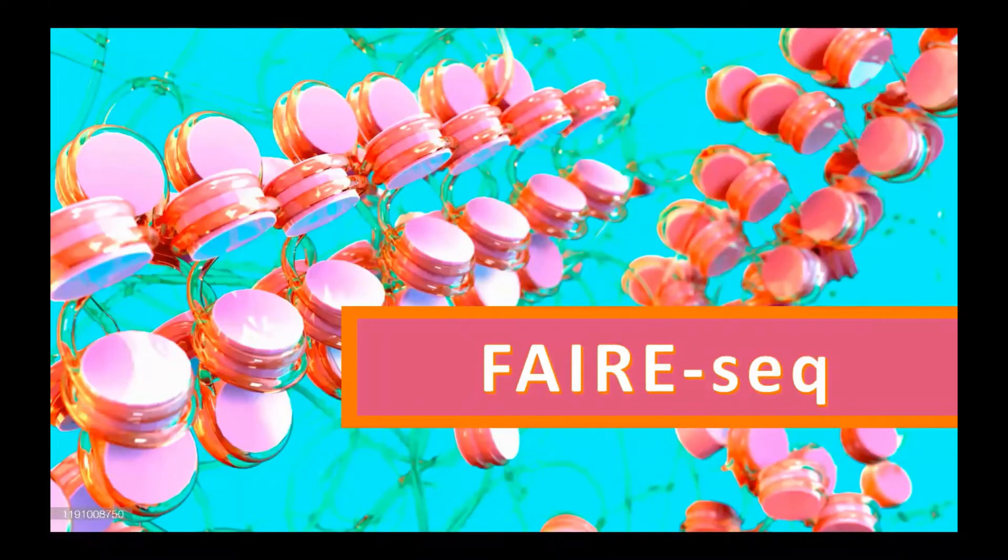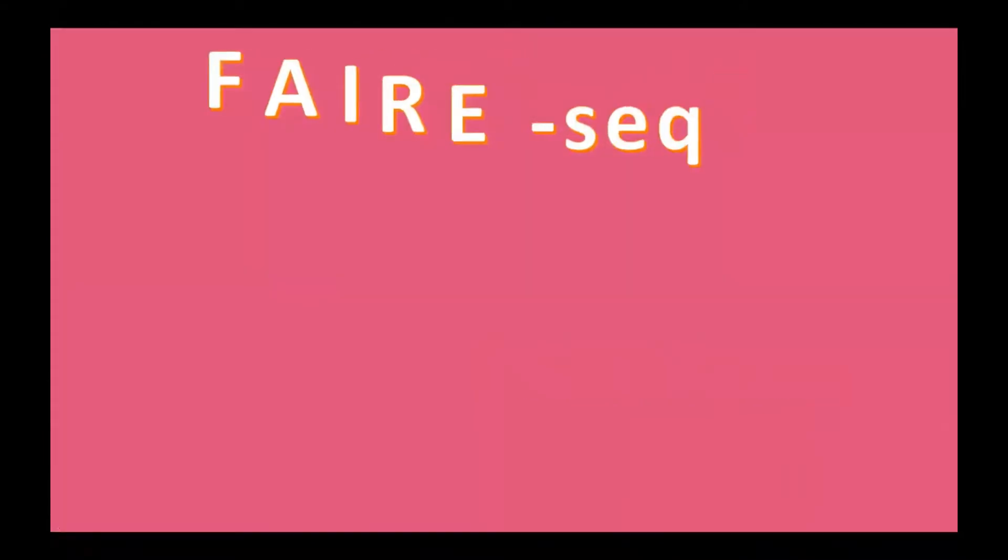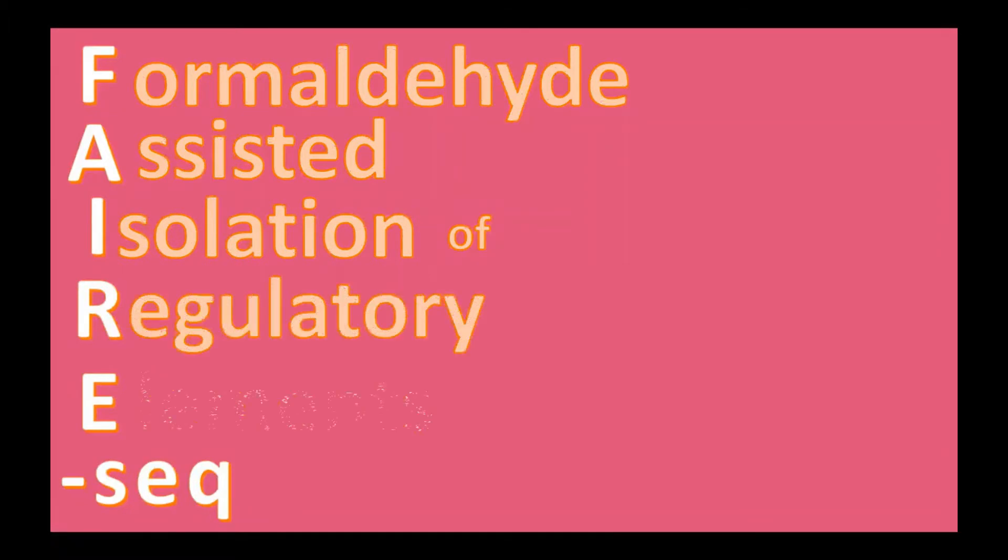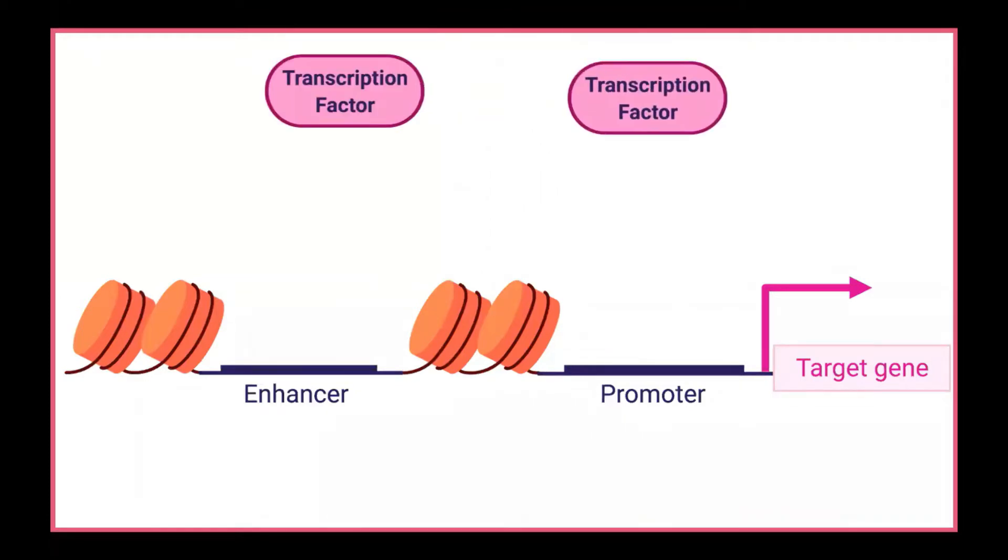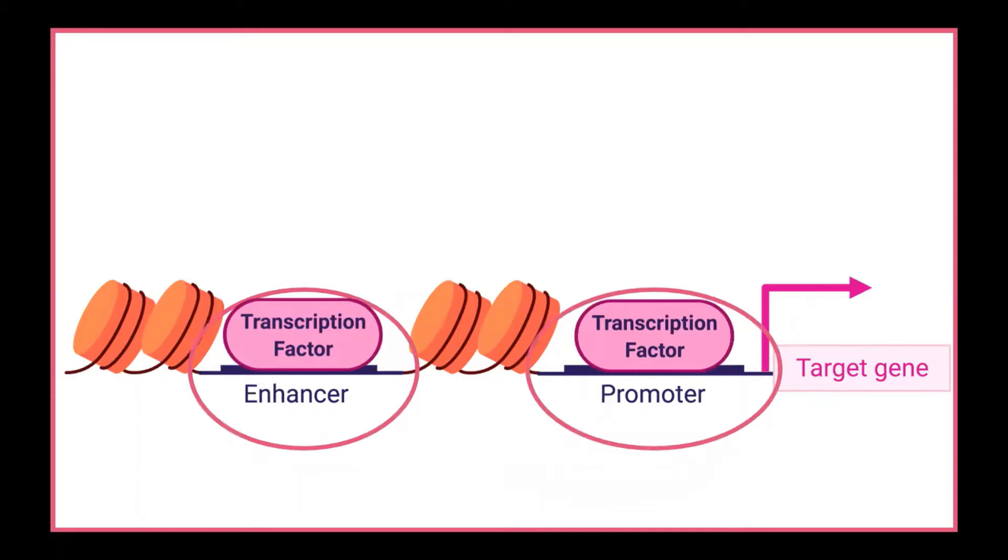Hello, today we'll be talking about FAIR-Seq, which stands for formaldehyde-assisted isolation of regulatory elements with deep sequencing. The purpose of this technique is to isolate active regulatory elements such as transcription factor binding sites and promoters, which are responsible for expressing genes, and to evaluate chromatin accessibility.